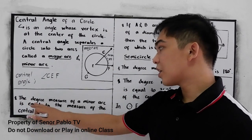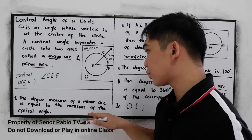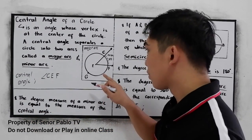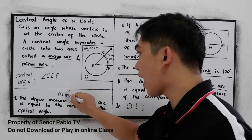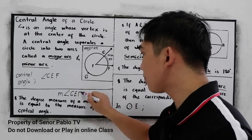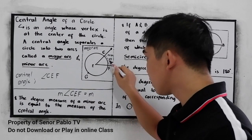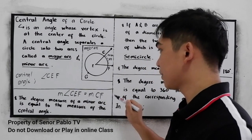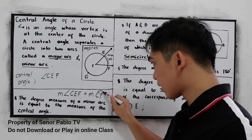the degree measure of a minor arc is equal to the measure of the central angle. So the measure of angle CEF is equal to the measure of the minor arc CF. And our symbol for the arc is this one.